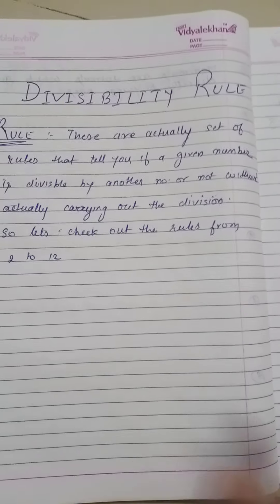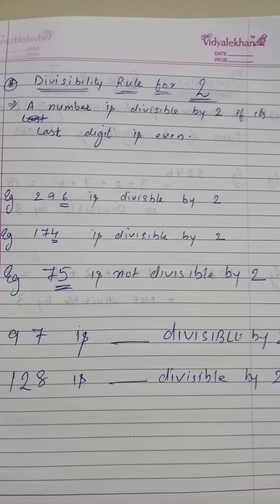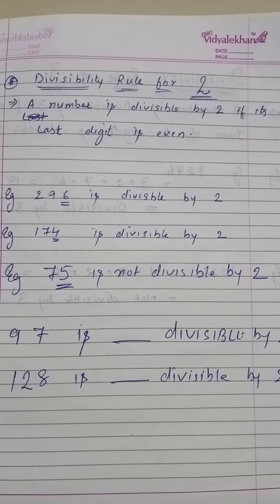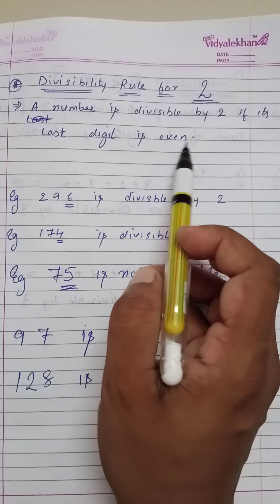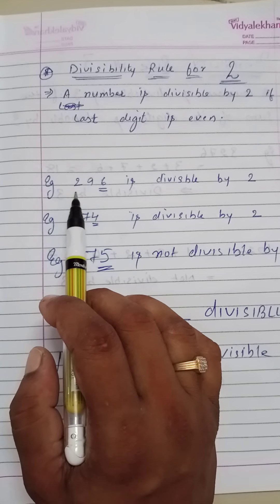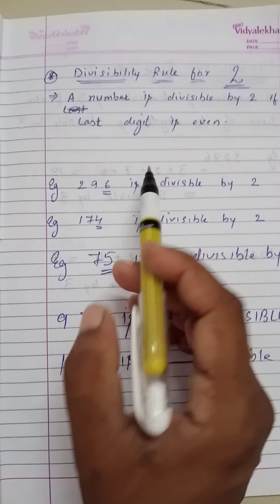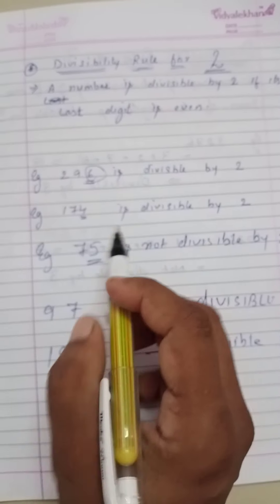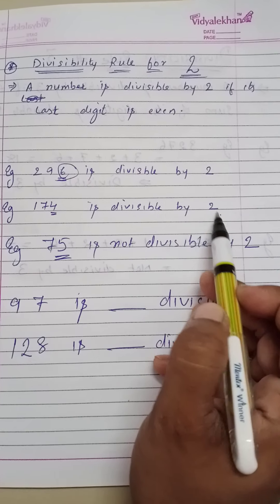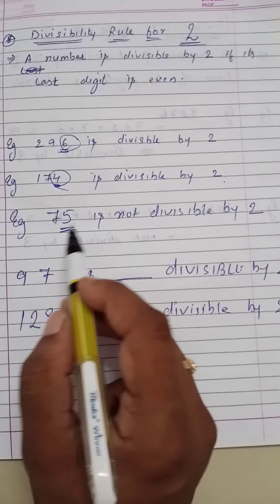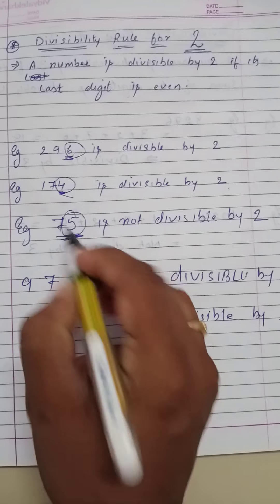The first one is the divisibility rule for 2. A number is divisible by 2 if its last digit is an even digit. As you can see, if the last digit is an even digit we can say that the number is divisible by 2. For example, 296 is divisible by 2 because the last digit is an even number. Same way, 174 is divisible by 2 because the last digit is also an even number.